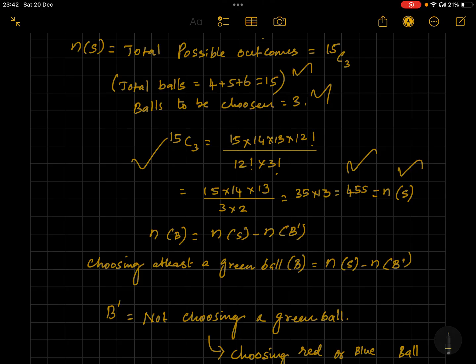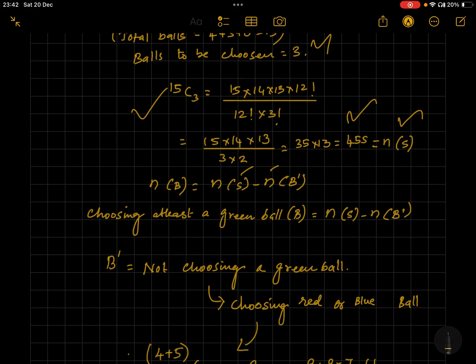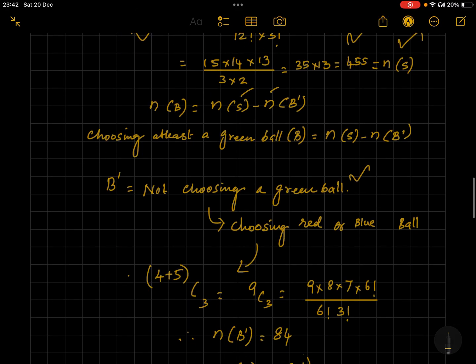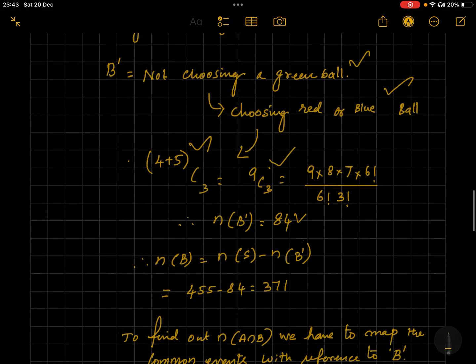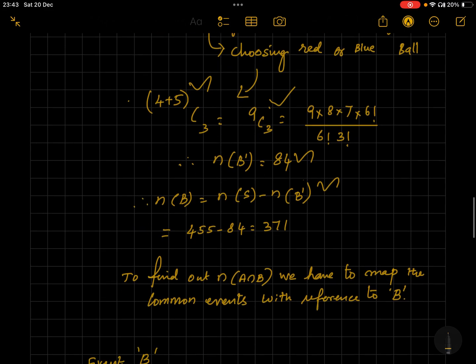So it can be done in 15C3 ways, which is equal to 455. That is our sample space n(S). Now we have to find out n(B). What is n(B)? Choosing a green ball. That can be easily done by subtracting n(B') from n(S). What is n(B')? Not choosing green ball means choosing red or blue ball. What is the red and blue balls together? We have nine red and blue balls put together. You have to choose three balls out of that.